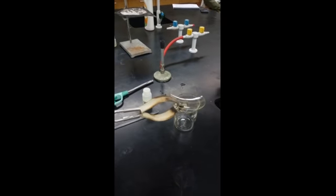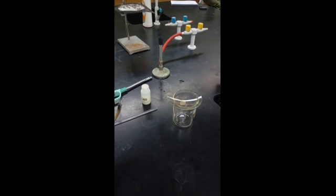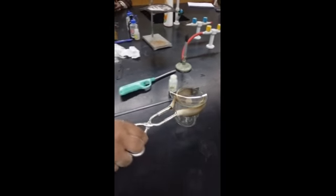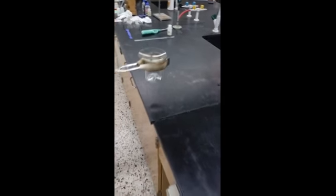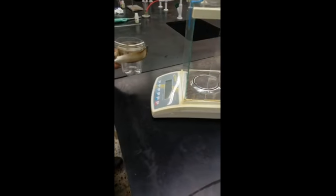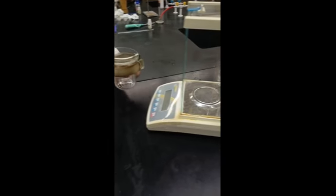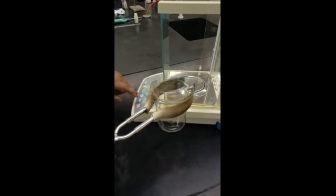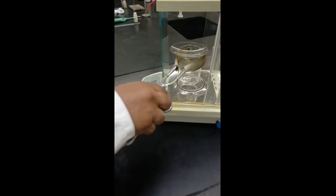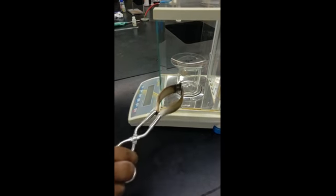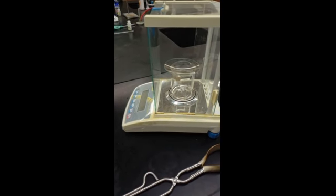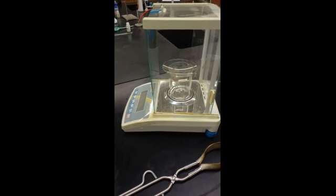You have the beaker and the watch glass. Now you have to take the mass of this one. It's not very hot, okay. Just switch on, make it zero, and keep it there. Take the mass of the beaker and the watch glass. Can you write it? 160 point...